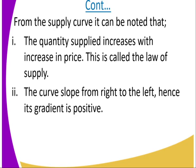This is called the law of supply. So in case you are going to state the law of supply, it is supposed to be that the quantity supplied increases with increase in price. Number 2, that we can get from the curve: the curve slopes from right to the left, hence its gradient is positive. It is not like the demand curve.